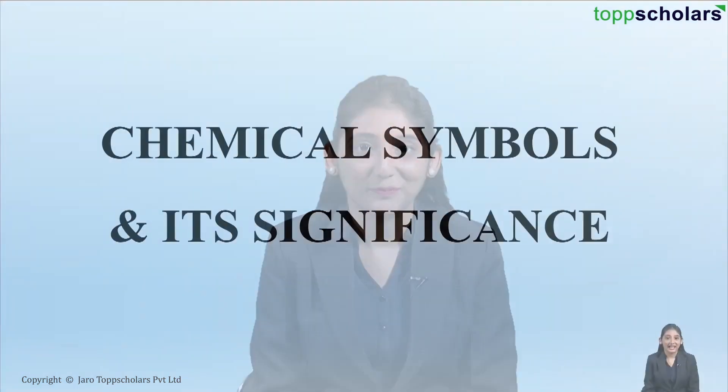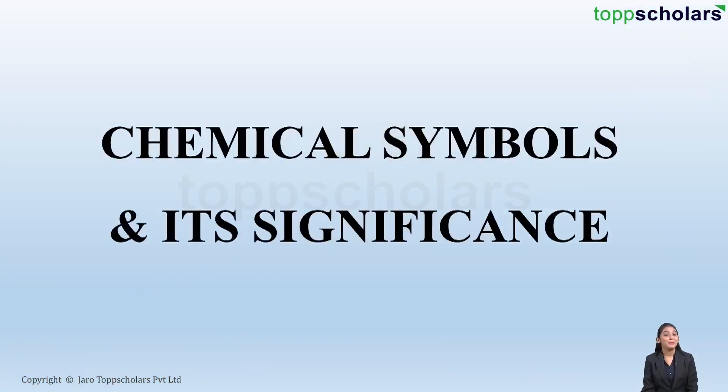Hello, dear students. Welcome to Top Scholars. As we know that there are 118 elements, but how do we represent these elements? Yes, that is by using symbols. So that is what we will discuss in today's lecture — that is chemical symbols and its significance.